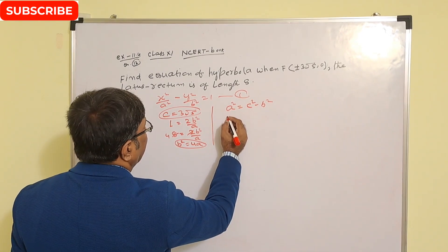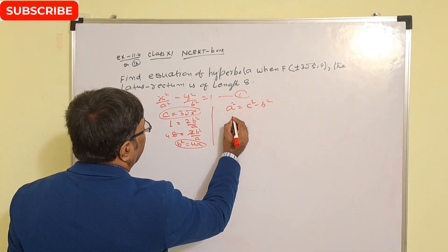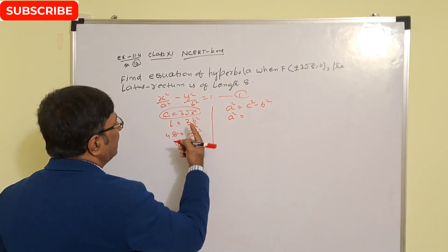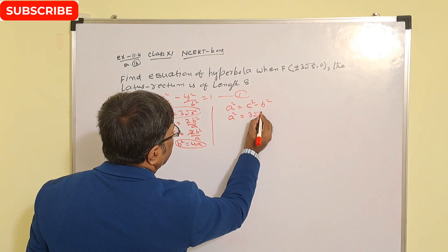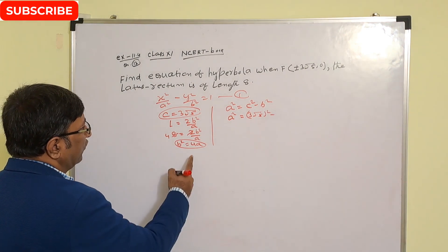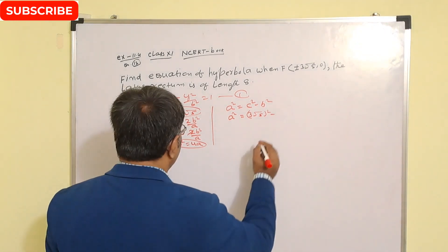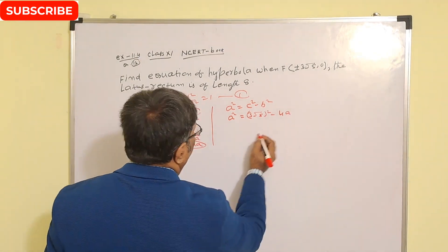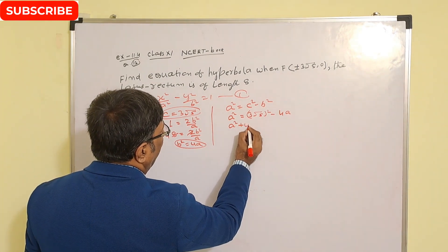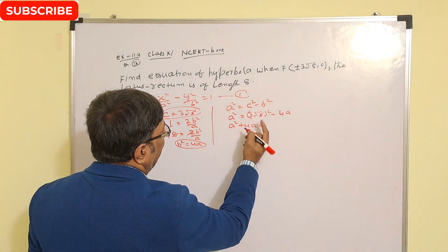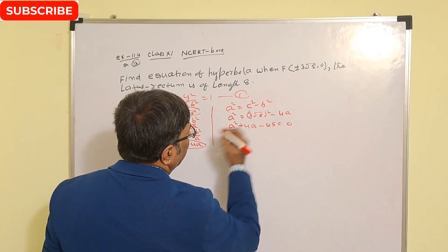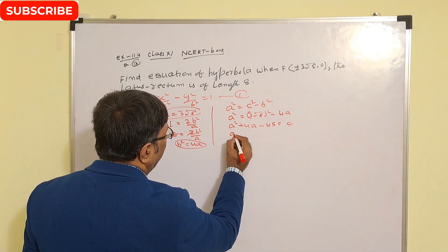So a² = c² − b² becomes a² = (3√5)² − 4a. Since (3√5)² = 45, we have a² = 45 − 4a.